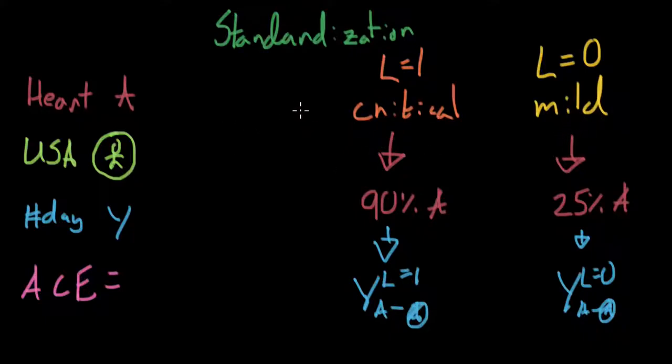So what we would do, we'd go ahead and we'd measure this. Perhaps we'd get 30 percent of the entire population is critical versus 70 percent of the entire population is mild. So we get these numbers. And now we can figure out what the average causal effect is.